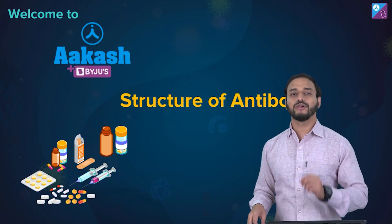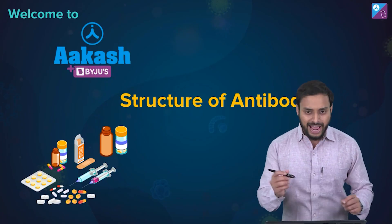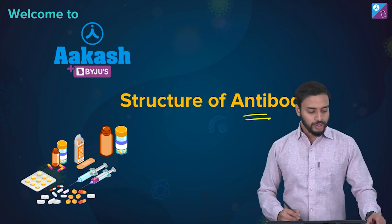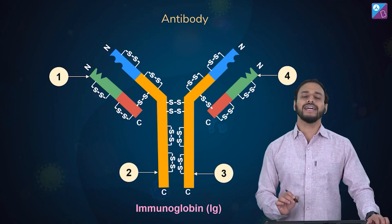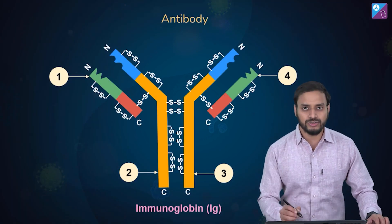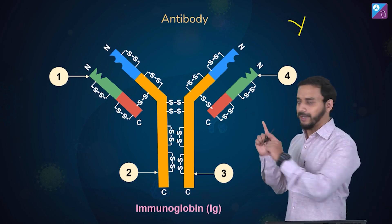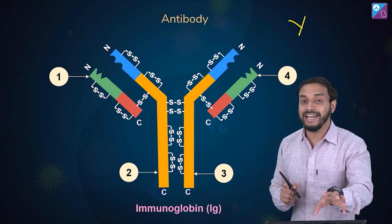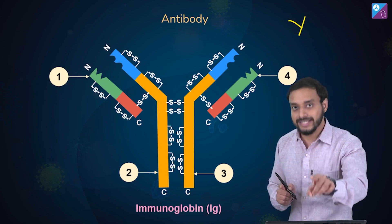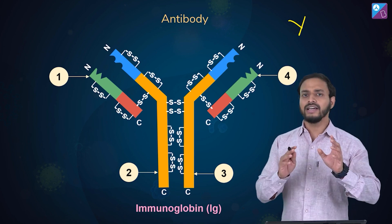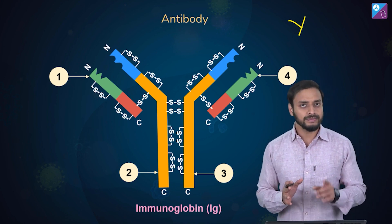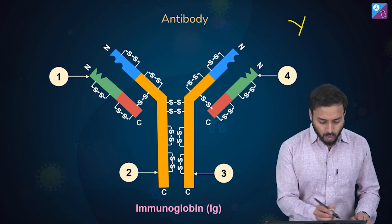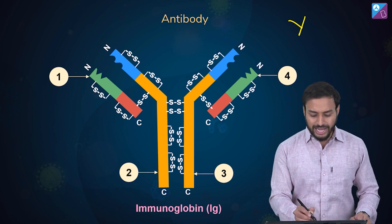Hello everyone, let us study about the structure of antibodies in a few minutes. The antibody structure looks like a Y shape — yes, it's Y-shaped. Let me explain how this Y-shaped structure is formed. Look at the labels one, two, three, and four.